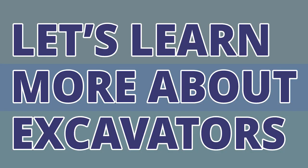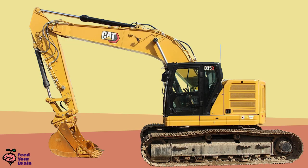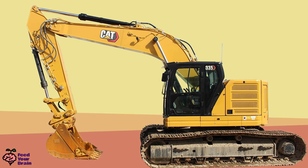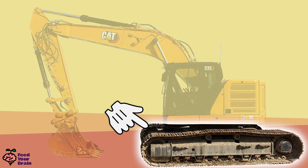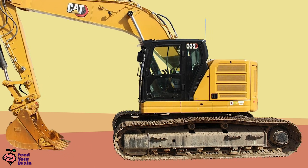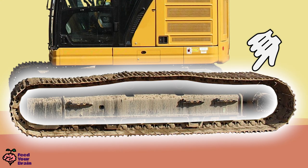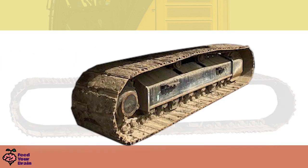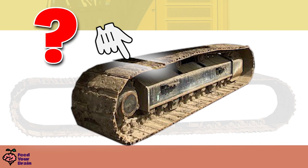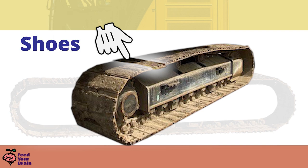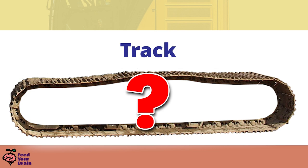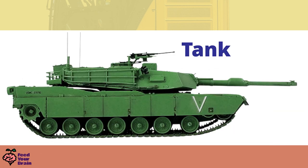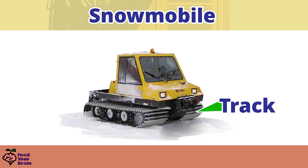Let's learn more about excavators and take a closer look at some of the parts. Everything underneath the cab is referred to as the undercarriage. The most obvious part is the track — and there are two tracks, one on each side. The track is made up of individual strips called shoes — but these are not typical shoes, these are plates of steel. Do you know of any other types of vehicles with tracks instead of wheels? Tanks use tracks. Some types of snowmobiles also use tracks.